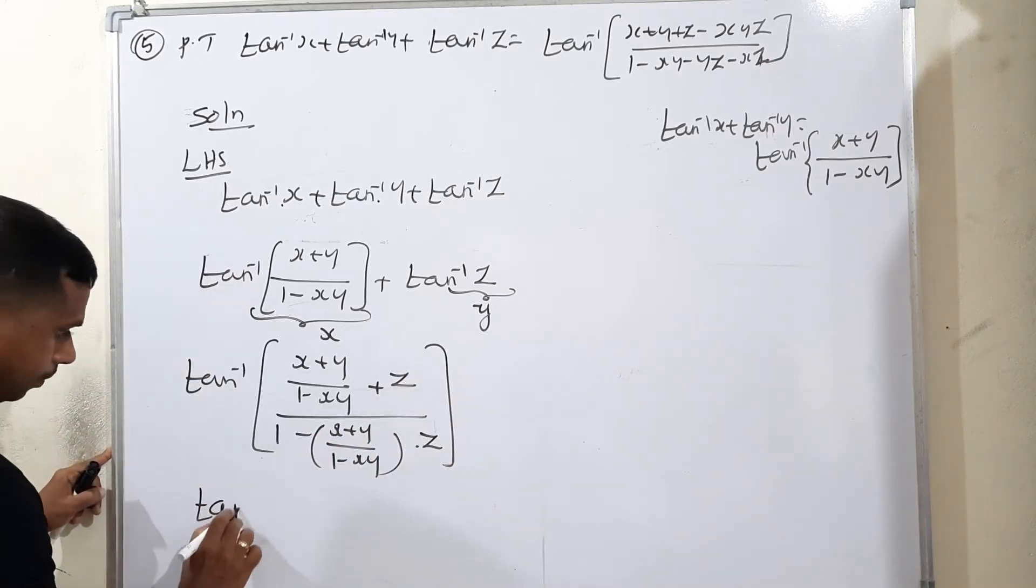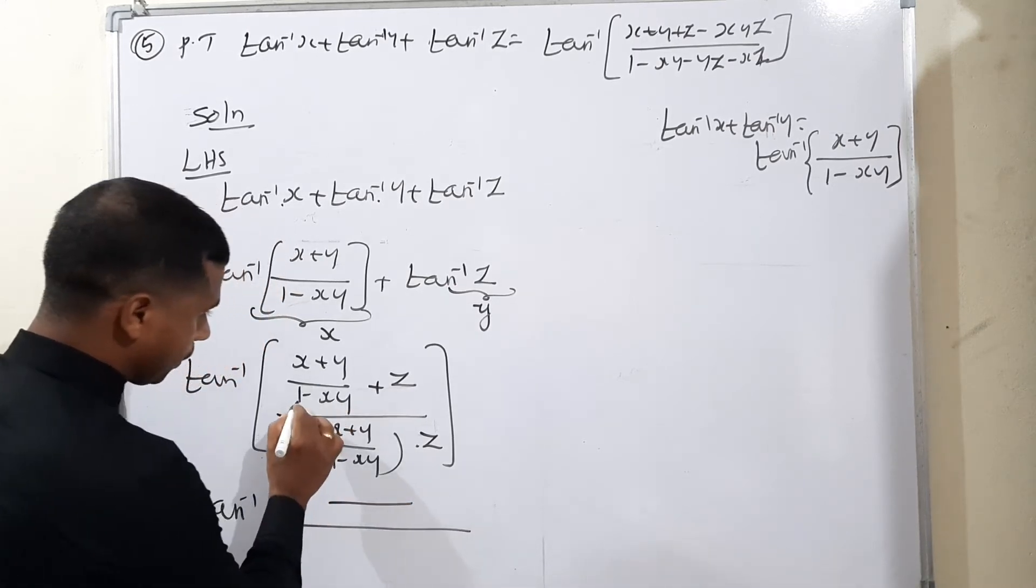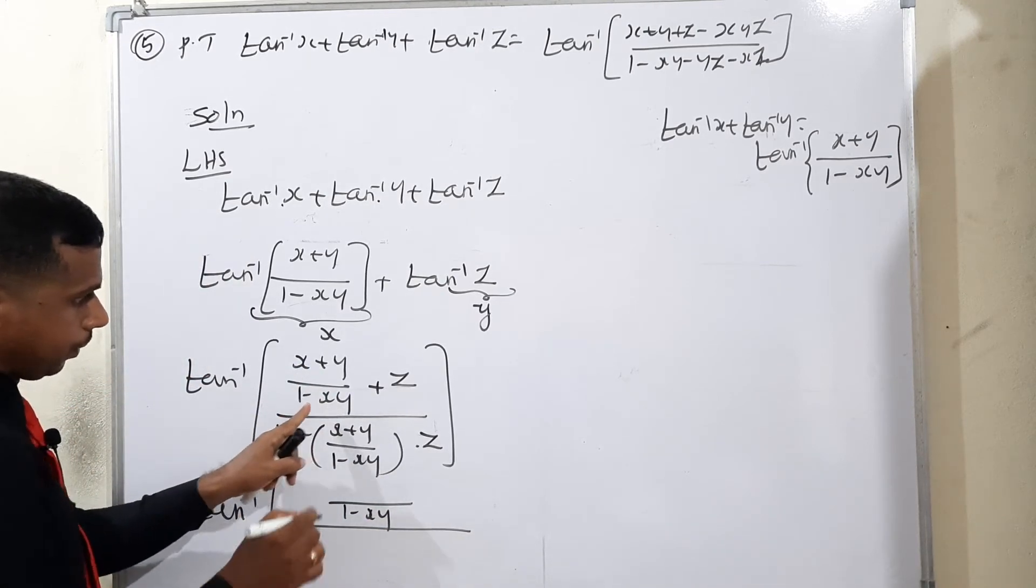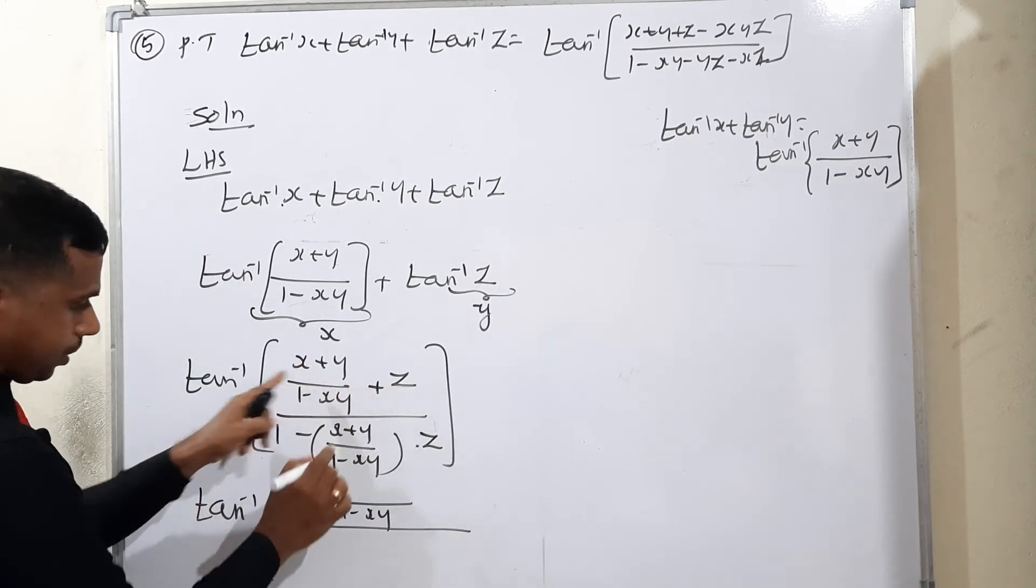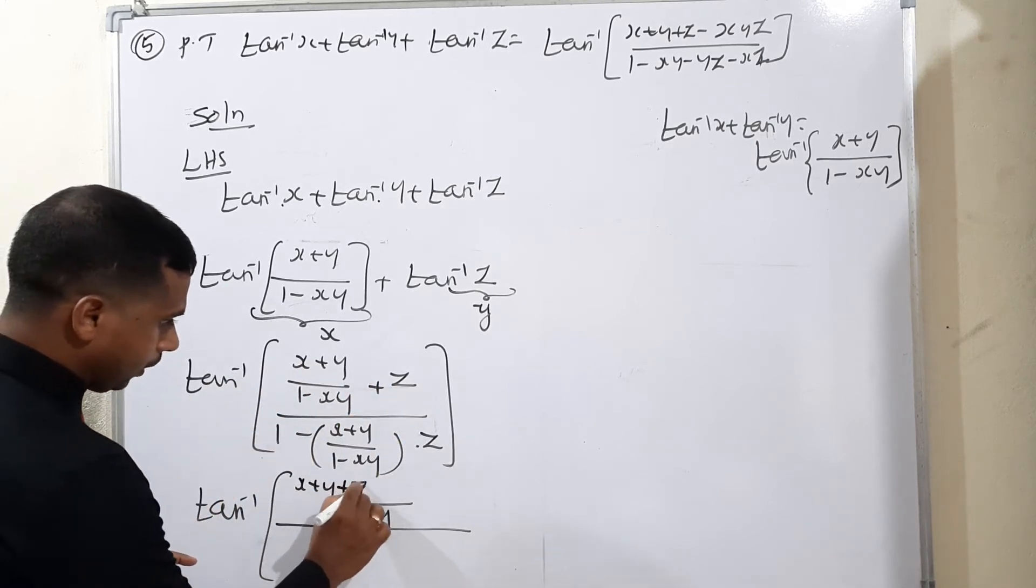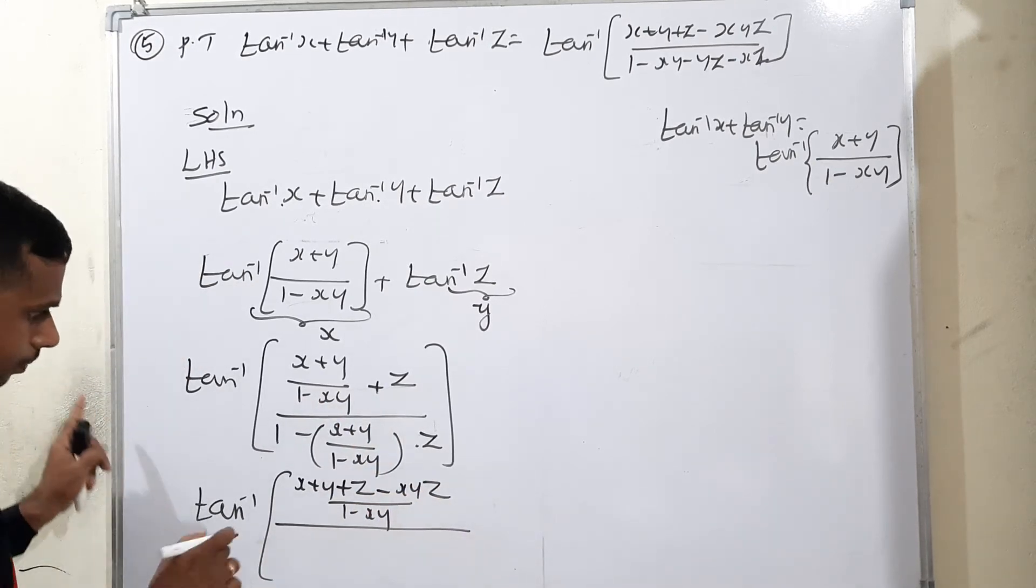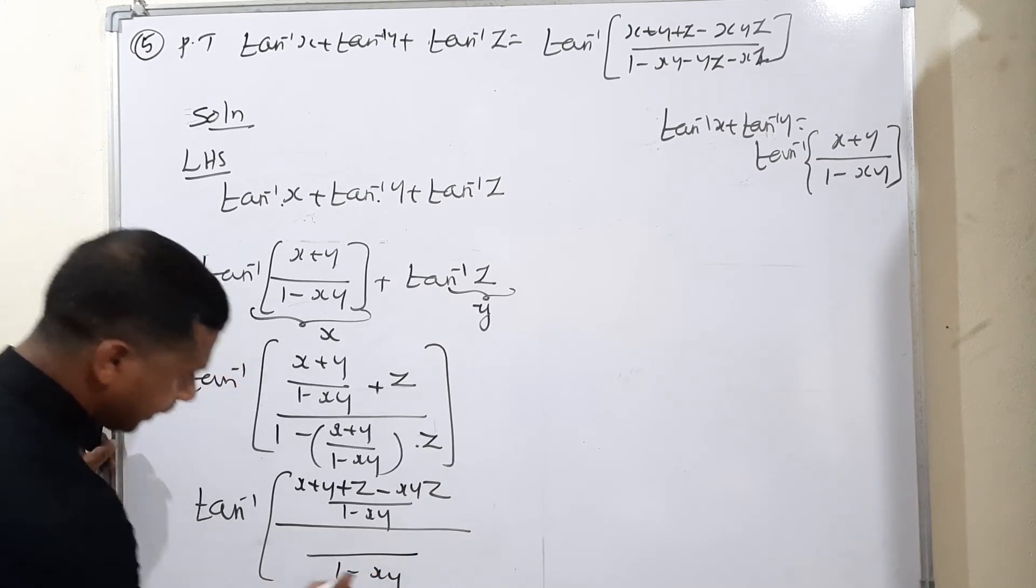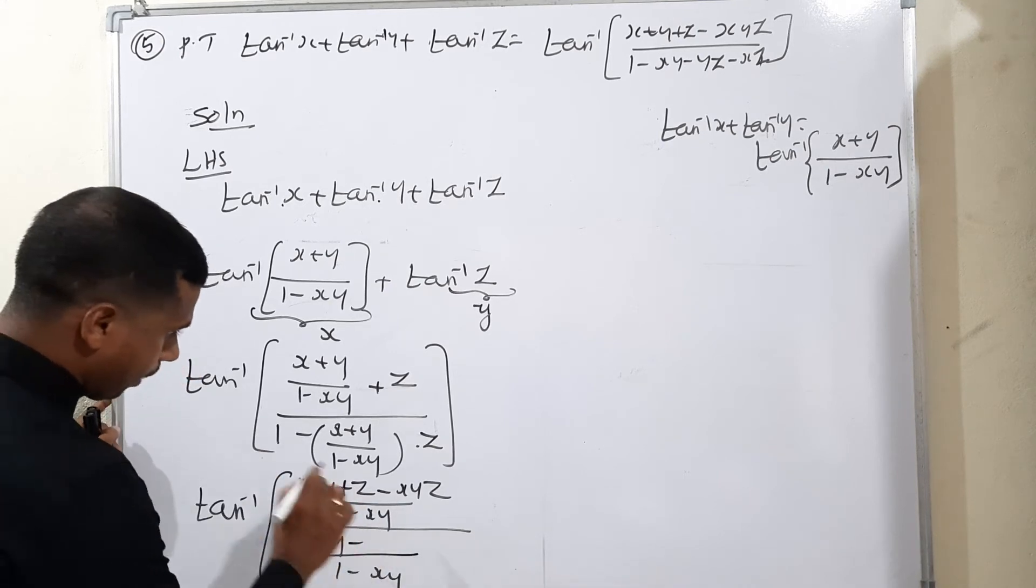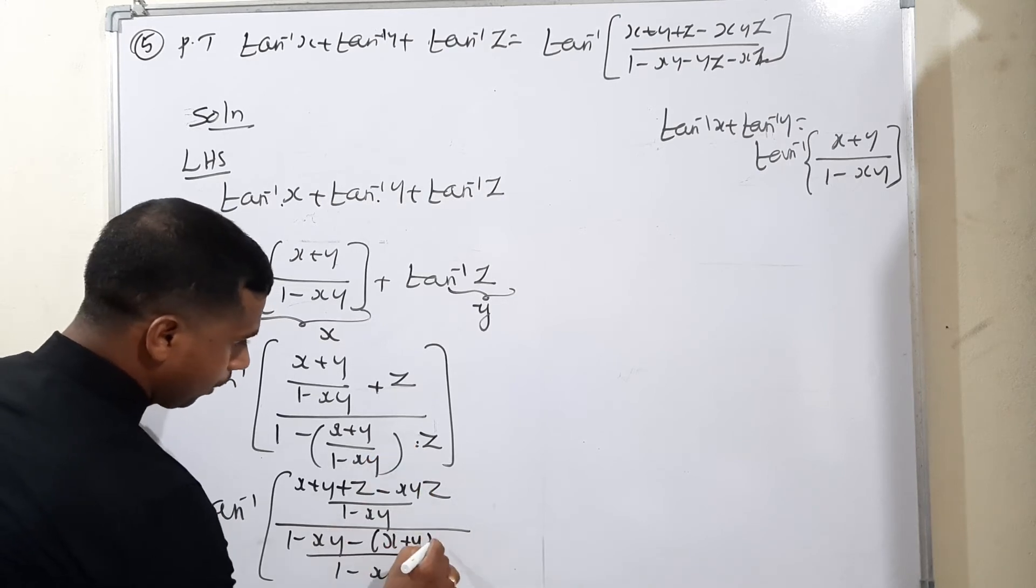Tan inverse of the common denominator 1 minus xy. On that is equal to 1 minus xy. First term as it is x plus y, then z into 1, then minus minus xyz. But here the common denominator same, 1 minus xy. First 1 into 1 minus xy means 1 minus xy, again minus of x plus y into z.